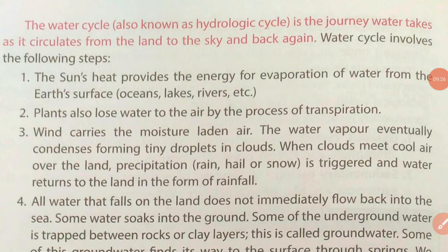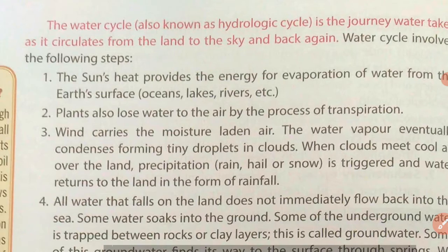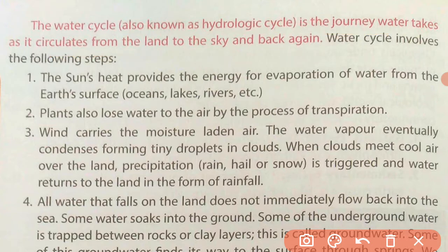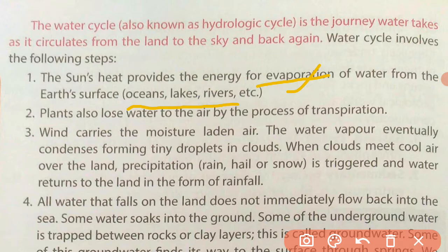The water cycle, also called the hydrological cycle, is the journey of water that circulates from the land to the sky and back again onto the land. The first step is evaporation: the sun's heat provides the energy for evaporation. Surface water present in oceans, lakes, and rivers evaporates due to the sun's heat and moves upward into the sky, into the atmosphere. Another way water goes upward is through transpiration — the water in plants' bodies gets evaporated, which we call transpiration, and water vapor goes into the atmosphere through this process.